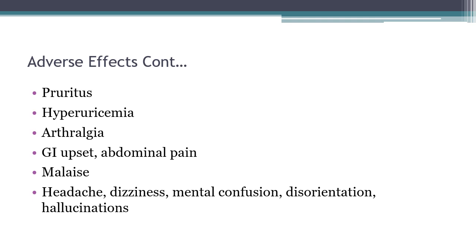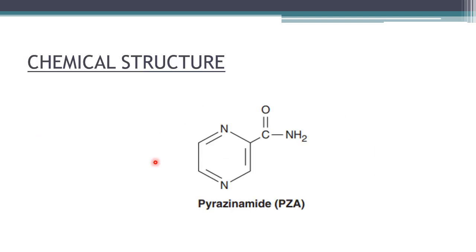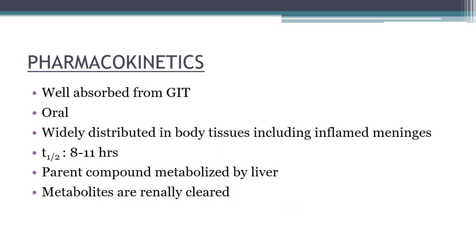Pyrazinamide is a relative of nicotinamide — stable and slightly soluble in water. It is inactive at neutral pH but active in acidic pH. It is taken up by macrophages and is active against intracellular organisms that may cause relapse, unlike isoniazid, rifampin, and ethambutol which are active against both intracellular and extracellular organisms. It is well absorbed from the GIT, widely distributed including inflamed meninges, with a half-life of 8–11 hours. The dose is 25 mg/kg/day and it is only active against Mycobacterium tuberculosis.